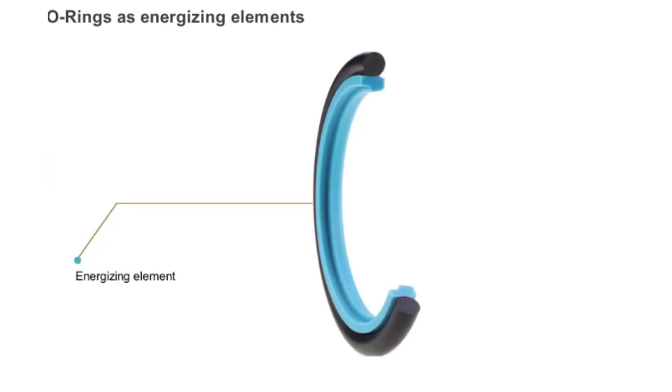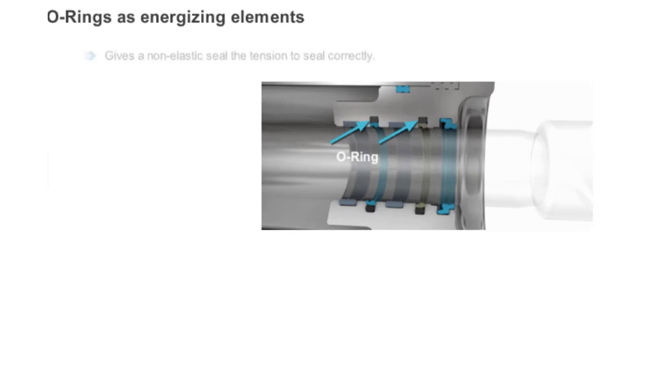O-rings can also be used as energizing elements. In this case, the O-ring has a static sealing function and provides the necessary initial tension to keep a non-elastic seal in its place. The principal element is a PTFE seal. As PTFE is non-elastic, the function of the O-ring is to give the PTFE seal the necessary initial tension so that its sealing edge is pressed to the counterpart.